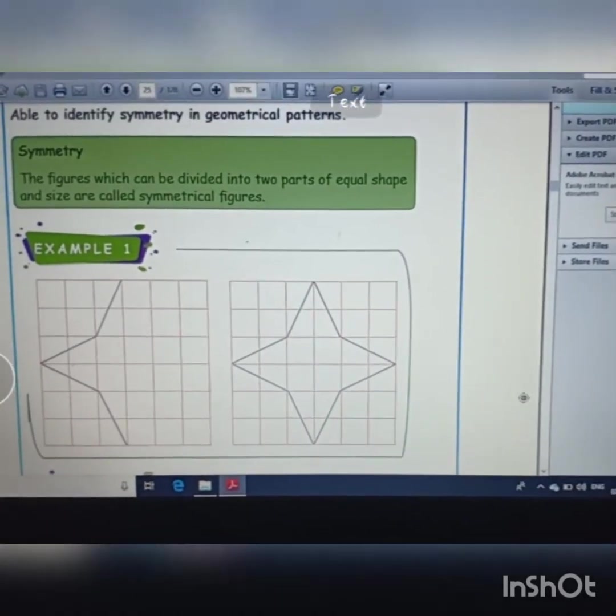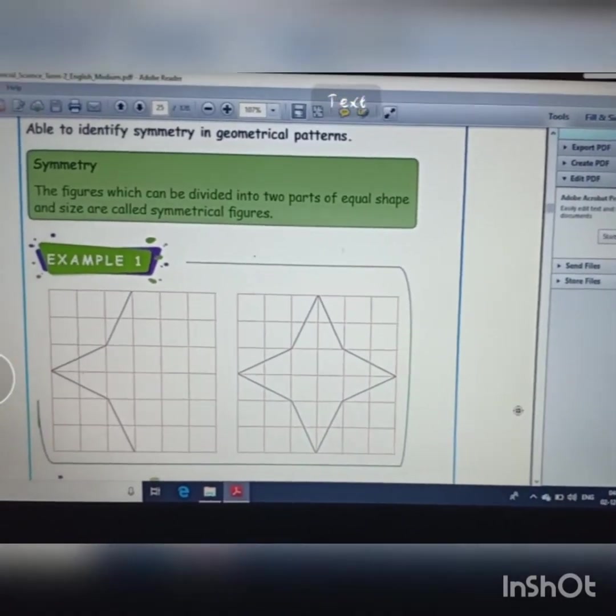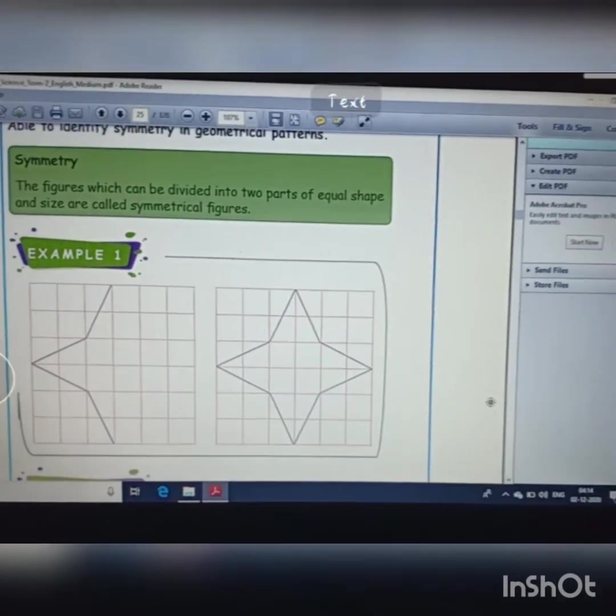Symmetry. The figures which can be divided into two parts of equal shape and size are called symmetrical figures.